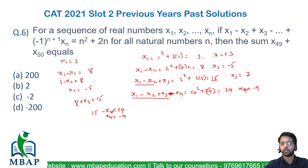So x1 is plus 3, x2 is minus 5, x3 is plus 7, x4 is minus 9.